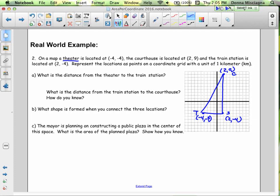So we want to find the distance from the theater to the train station. Well, actually, that's pretty easy, right? Because this is a horizontal line. So to find the length of a horizontal line, you can just take the absolute value of the difference in the X coordinates, because the Y coordinates don't change.